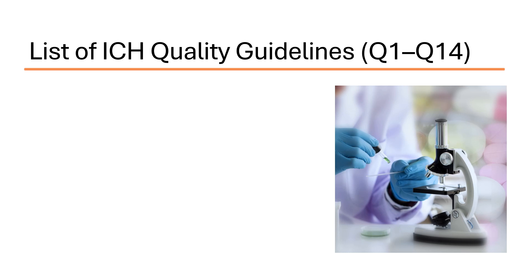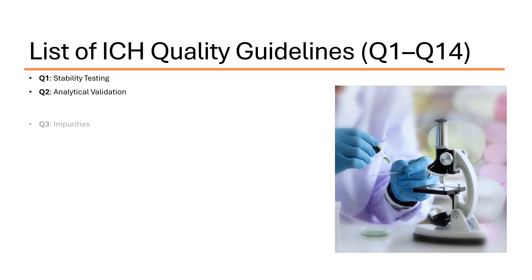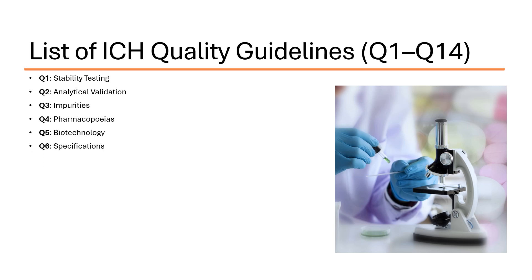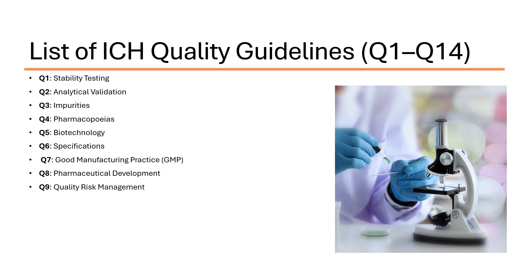Now we will discuss the list of ICH Quality Guidelines from Q1 to Q14. Q1 is Stability Testing, Q2 is Analytical Validation, Q3 is Impurities, Q4 is Pharmacopeias, Q5 is Biotechnology, Q6 is Specifications, Q7 is Good Manufacturing Practices, Q8 is Pharmaceutical Development, Q9 is Quality Risk Management, Q10 is Pharmaceutical Quality System, Q11 is Development and Manufacture of Drug Substances.